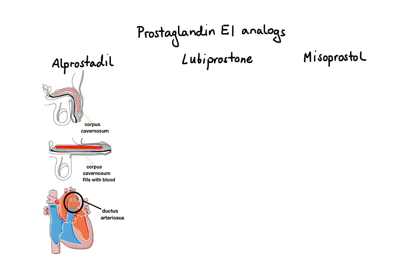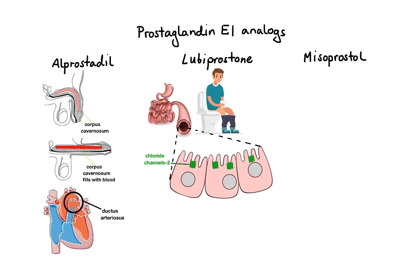The next prostaglandin E1 analog is lubiprostone. Lubiprostone is used in the treatment of chronic constipation. It works by activating type 2 chloride channels in epithelial cells lining the intestine. By stimulating these channels, lubiprostone promotes secretion of chloride followed by passive secretion of sodium and water, which increases the liquidity of the intestinal contents. This secretion also stimulates intestinal smooth muscle contractions, which facilitate the passage of stool.